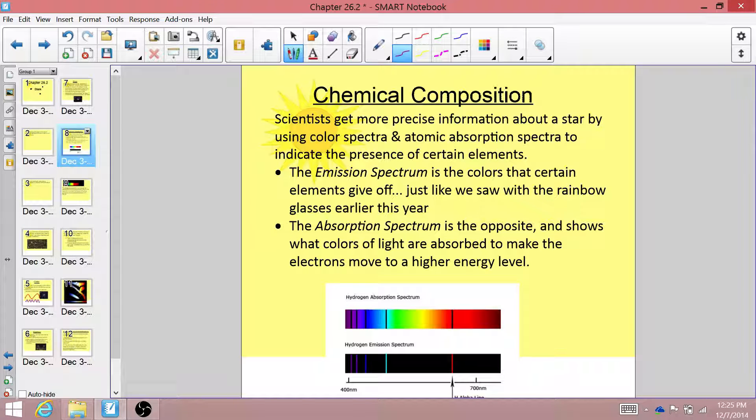Now all of this is really important, but really what it comes down to is the chemical composition of the stars. Scientists get a lot more precise information about a star by looking at the color spectra and figuring out what elements are contained within that star. It turns out that the hotter a star is, and the larger it is, the more elements will be composed inside that star.